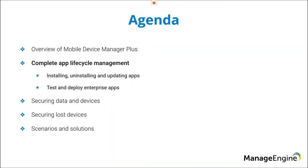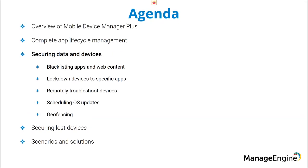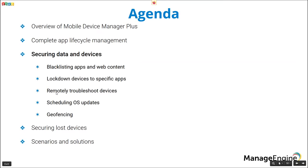Then we'll cover app lifecycle management — how to install, update, and deploy your own enterprise apps, including testing before deploying to production. We'll also cover how to prohibit certain applications and web content, how to lock point-of-sale devices to specific applications, and how to remotely troubleshoot end devices. Additionally, we'll discuss scheduling OS updates, geofencing to lock devices to a particular boundary, and securing corporate information if a device is lost or stolen.